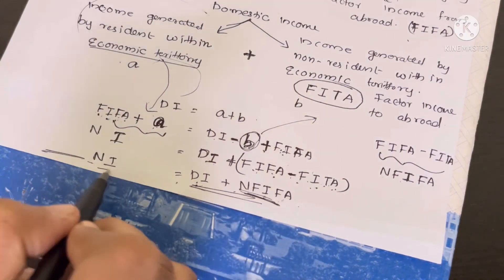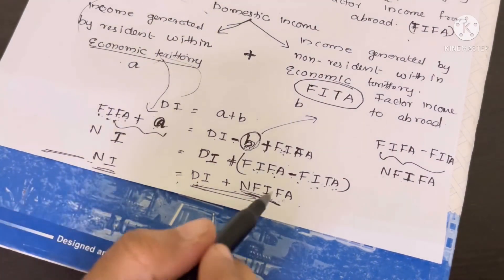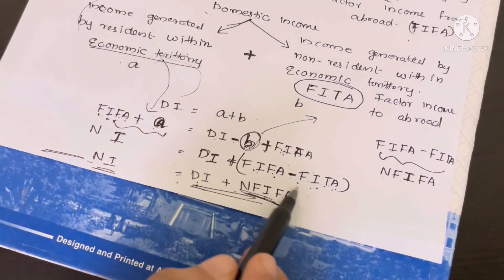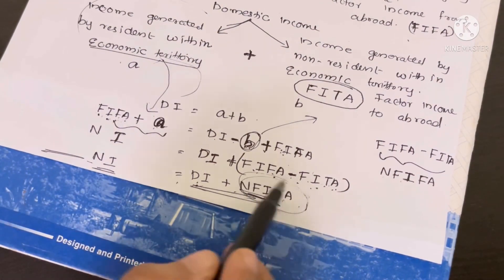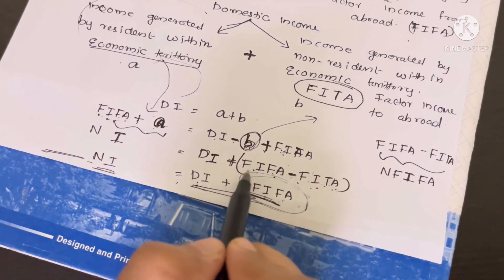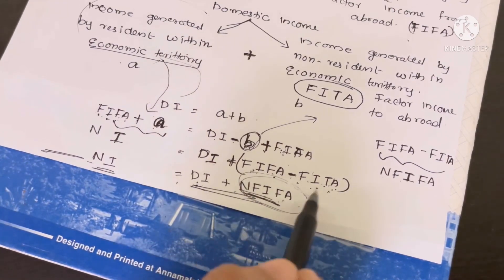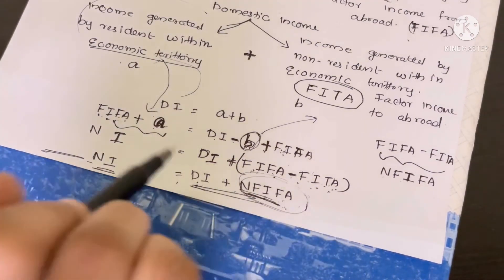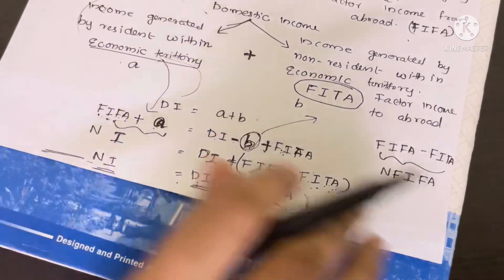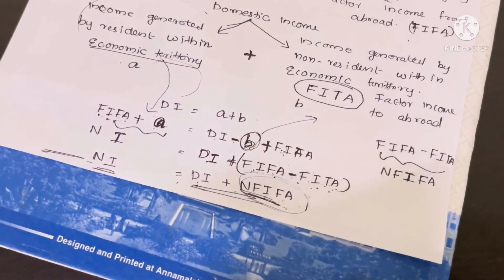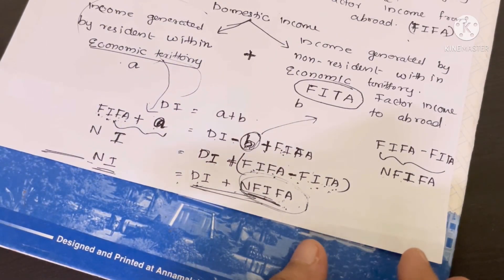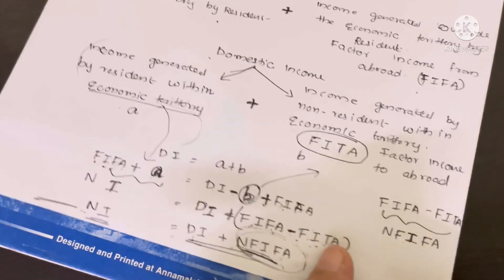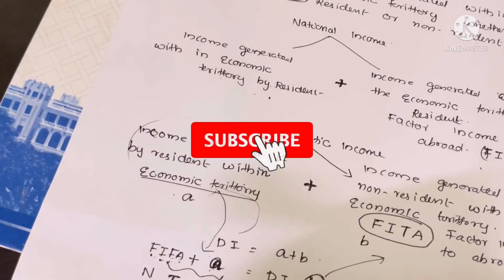Now we know the national income formula. We have to answer the question of NFIA and the difference between domestic income and national income. National Income equals Domestic Income plus Net Factor Income from Abroad.